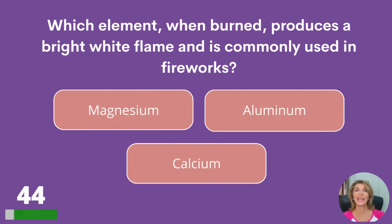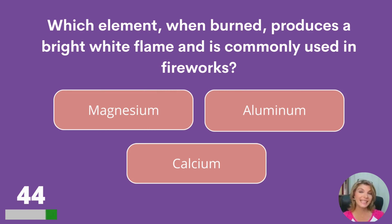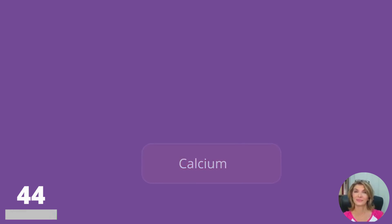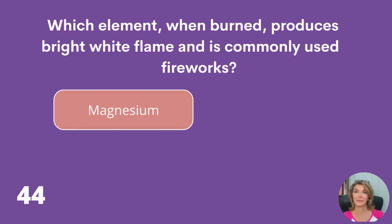Which element, when burned, produces a bright white flame and is commonly used in fireworks: magnesium, aluminum, or calcium? Magnesium.